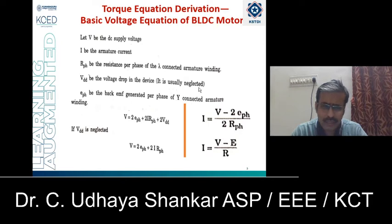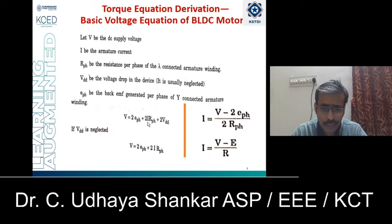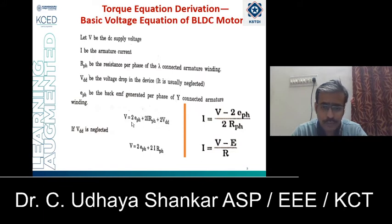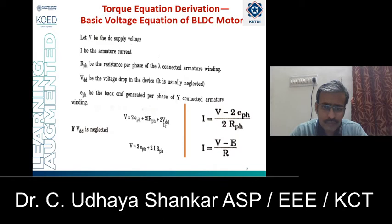V_DD is normally neglected because it is very small when compared to the other voltage drops and the supply voltage. E_phase is the EMF generated per phase in the star-connected armature winding. From this, the total supply voltage equals 2·E_phase + 2·I·R_phase + 2·V_DD. The factor of 2 appears because at any instant in a BLDC, two different devices and two different phases are switched on. Since V_DD is negligible, it is dropped from the expression.